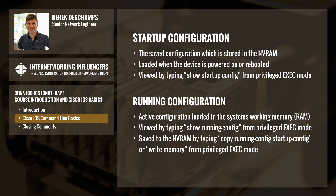To recap: the startup configuration is the saved configuration stored in NVRAM, loaded when the device is powered on or rebooted. It can be viewed by typing 'show startup-config' from privileged exec mode. The running configuration is the active configuration loaded in the system's working memory (RAM), viewable by typing 'show running-config' from privileged exec mode. The running configuration is saved to NVRAM by typing 'copy running-config startup-config' or 'write memory' from privileged exec mode.